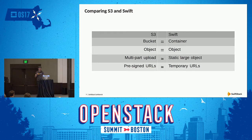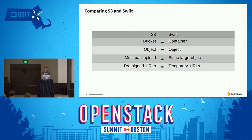The second major distinction is S3 only lets you have a certain number of buckets — I believe 100 is the default. Swift has no such practical limitation. I suppose if you start getting into millions or tens of millions, you're probably going to hit the same sort of problems that Matt's solving with container sharding, but to my knowledge no customer has ever asked about that.